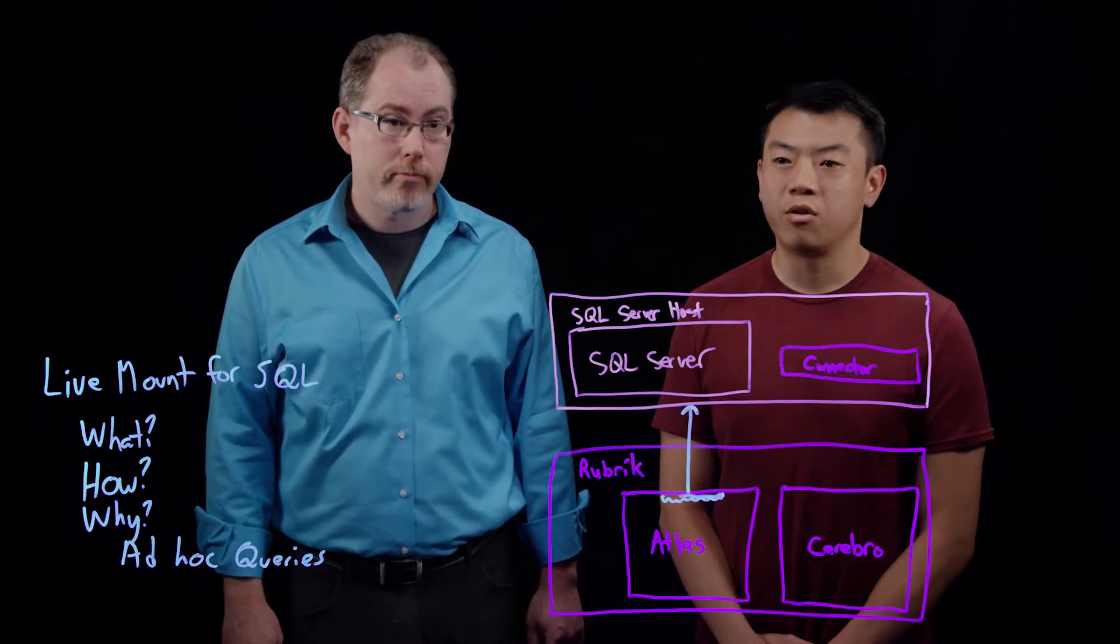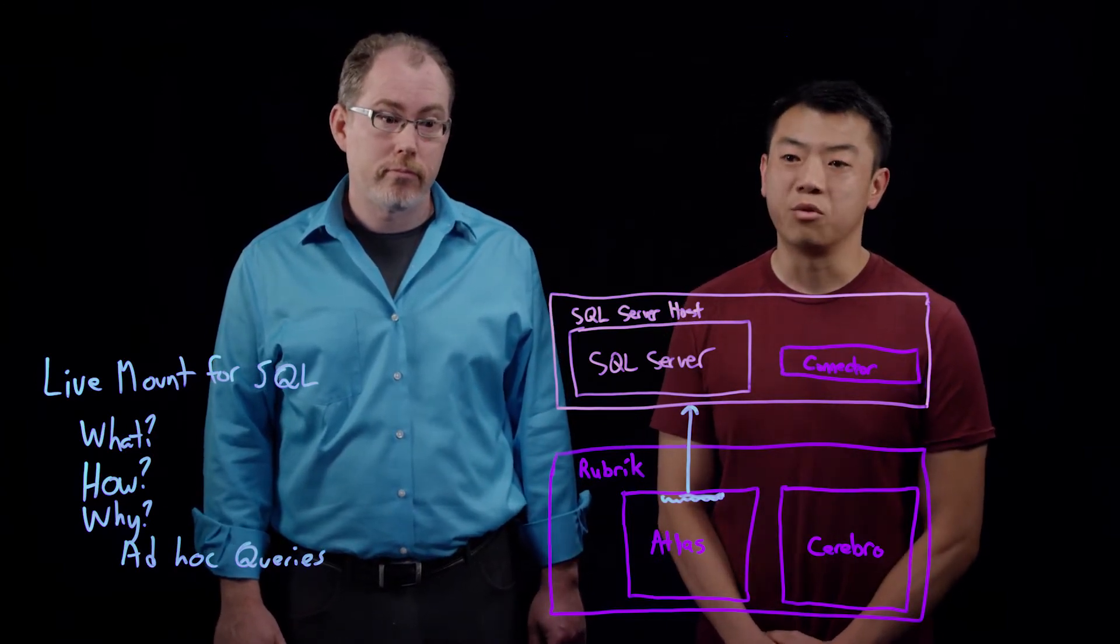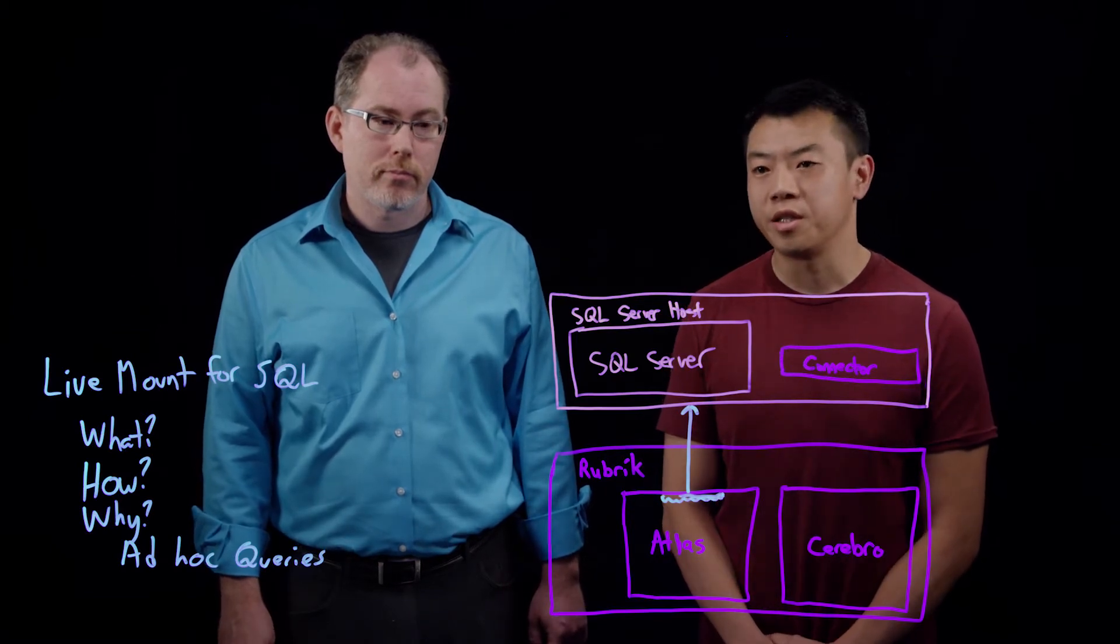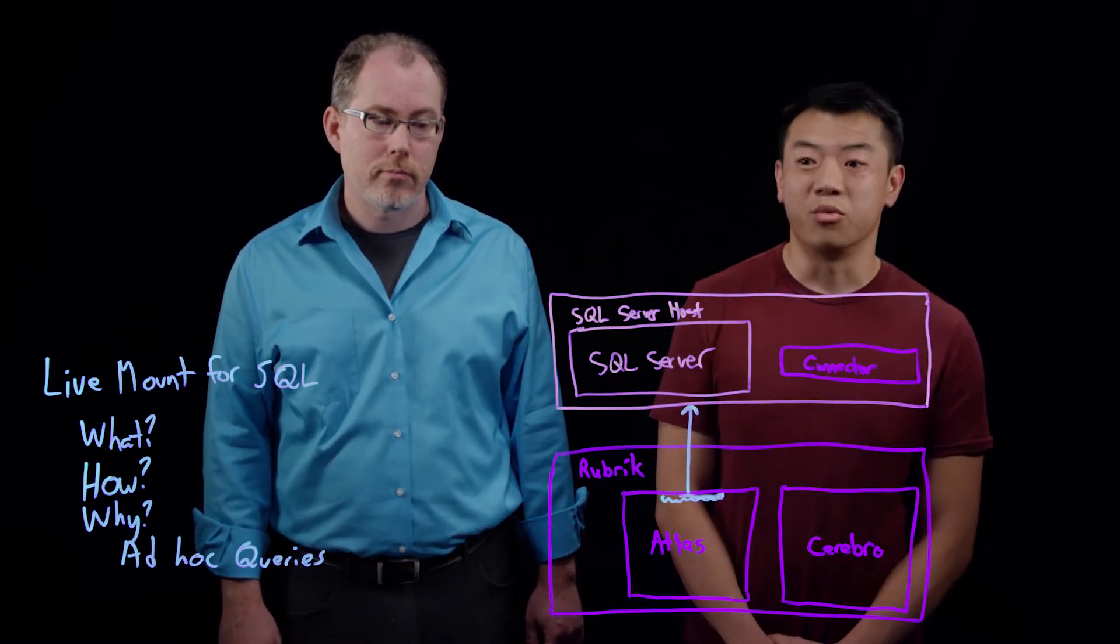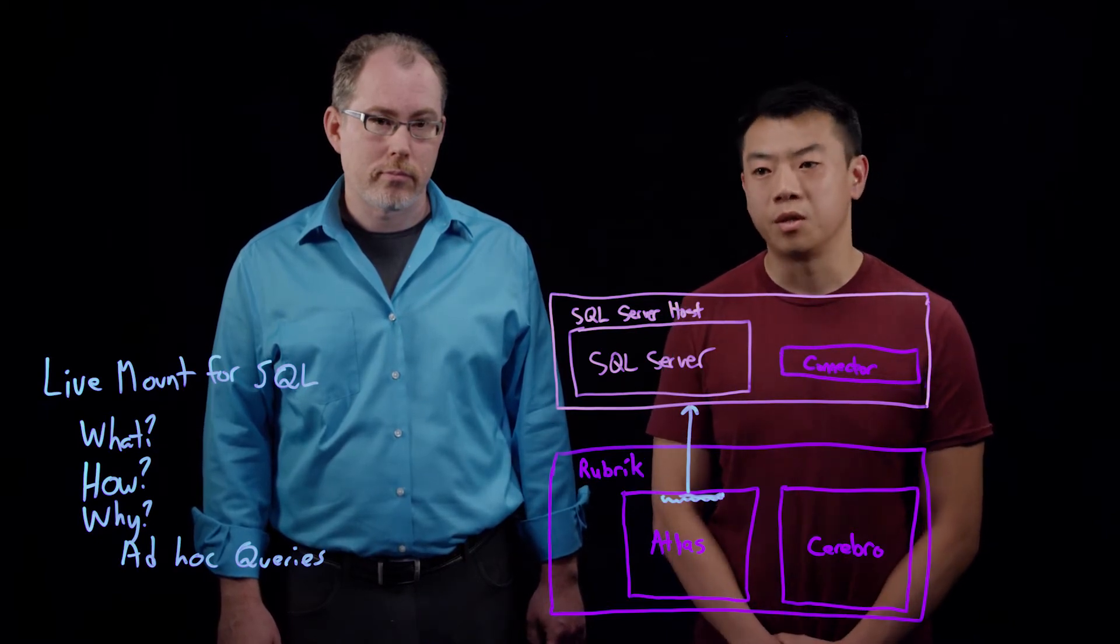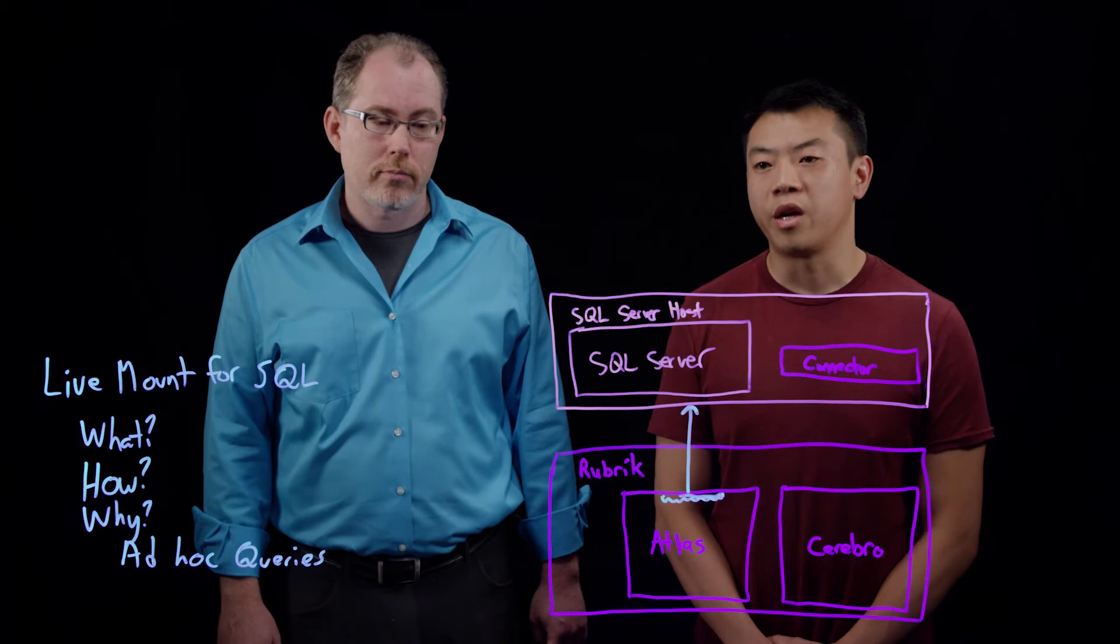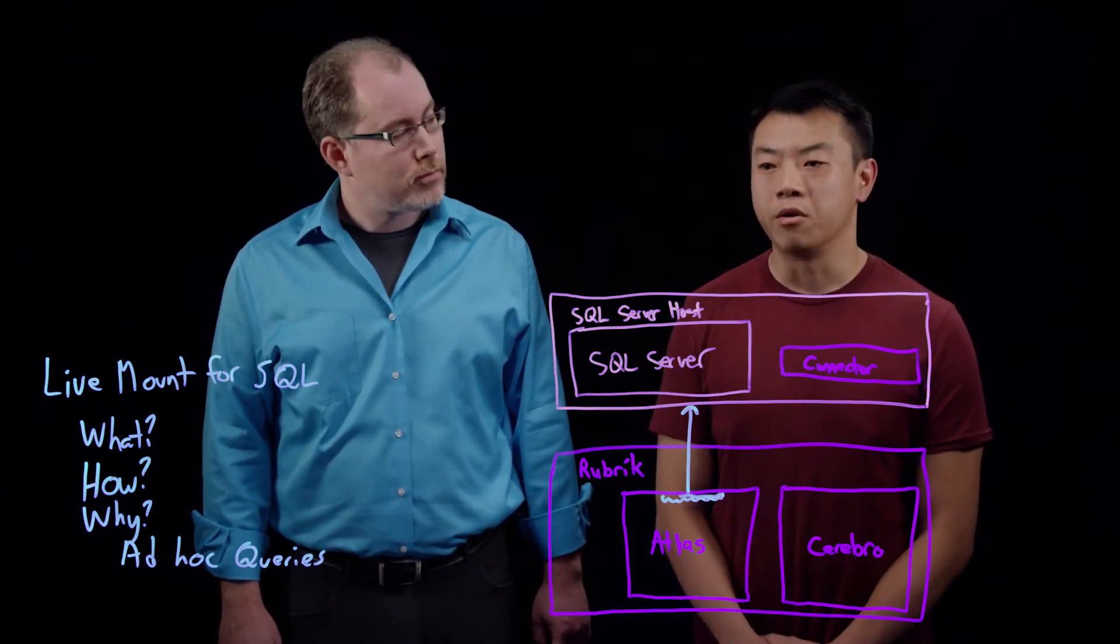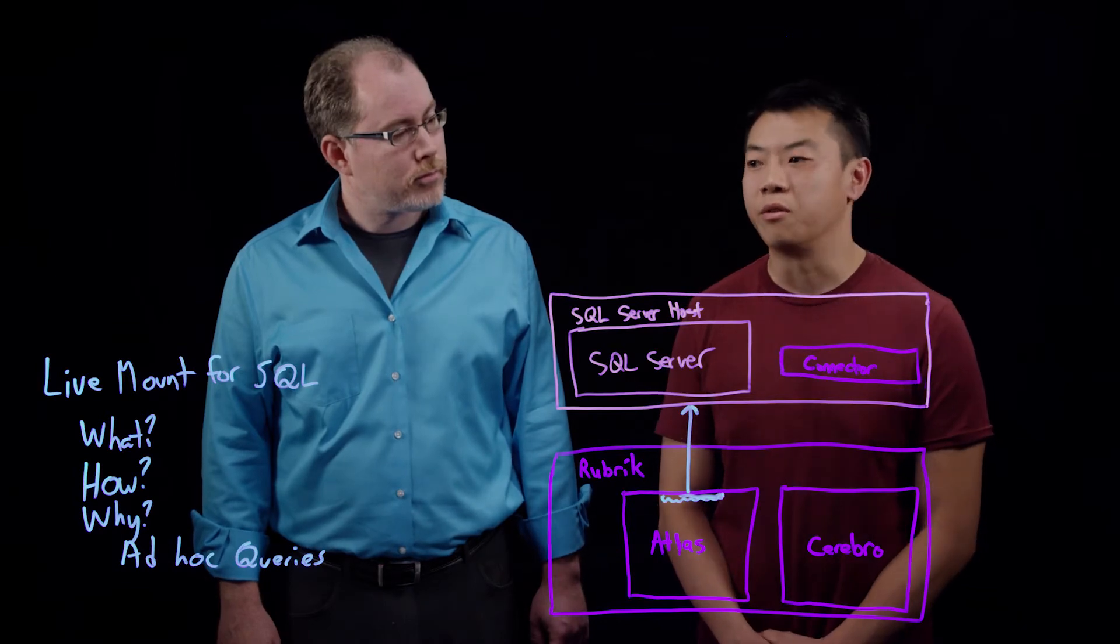And likewise, there are use cases like digging through history. Sometimes a CIO wants to know when a certain piece of data changed. This would take a really long time if you had to do full restores of multiple snapshots. But instead, with our live mount feature, you can actually just mount multiple snapshots at the same time and go through each of them to identify exactly what you're looking for.